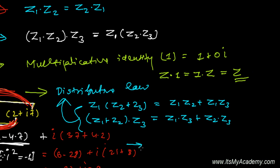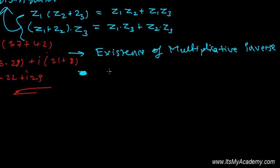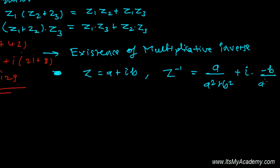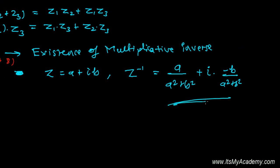The last property is the existence of a multiplicative inverse. For every non-zero complex number Z equals A plus iB, there exists a multiplicative inverse Z⁻¹, which equals A/(A²+B²) plus i·(-B)/(A²+B²). Always keep in mind that Z times 1/Z equals 1. We'll discuss the multiplicative inverse in more detail later.